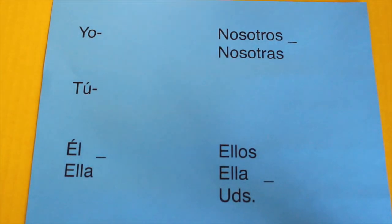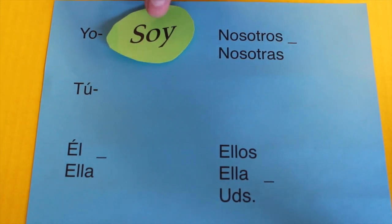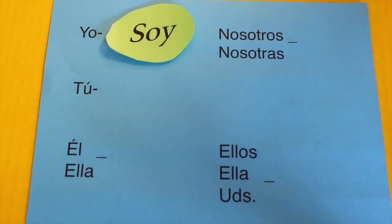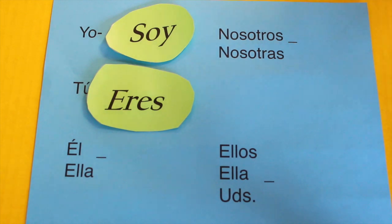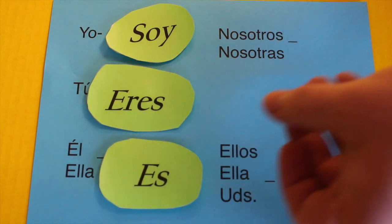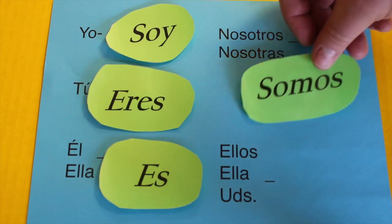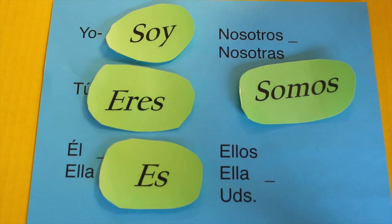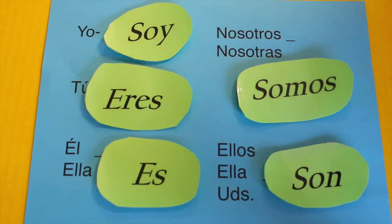In order to change the verb ser so that it makes sense, you have to conjugate it. The conjugation and the different forms are: yo soy — I am; tú eres — you are; él or ella — he or she — is es; nosotros somos — we are; and they are, or you all are, is son.